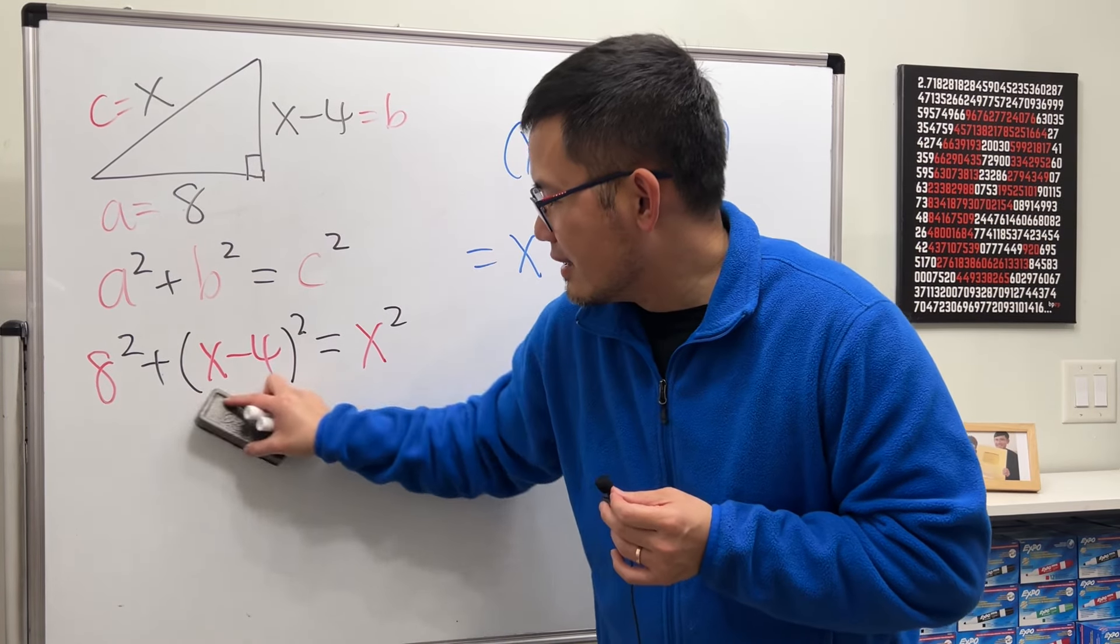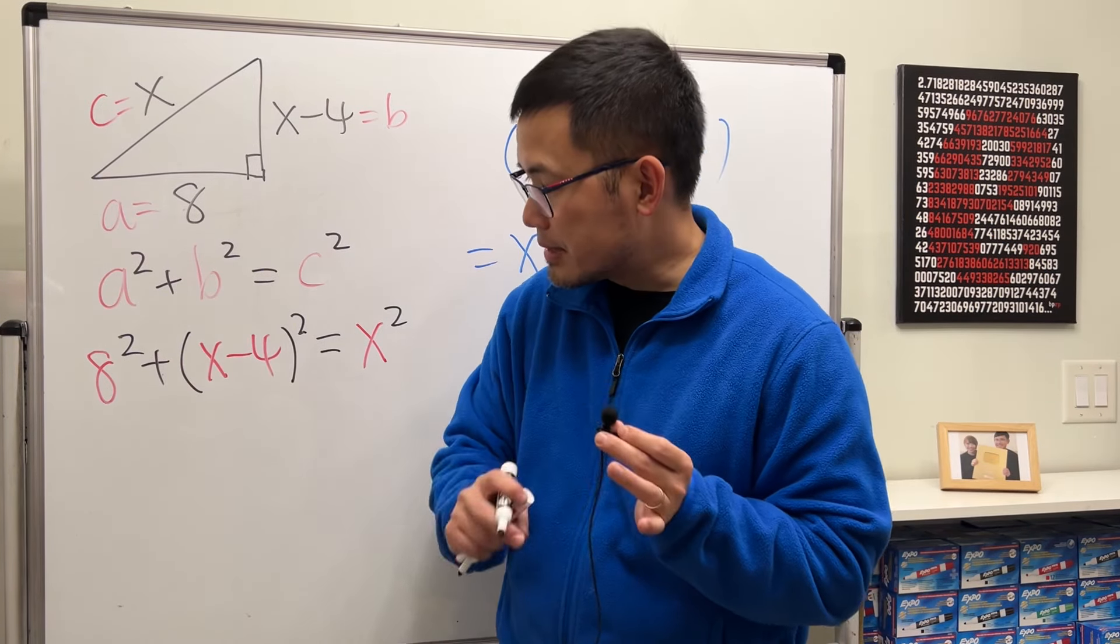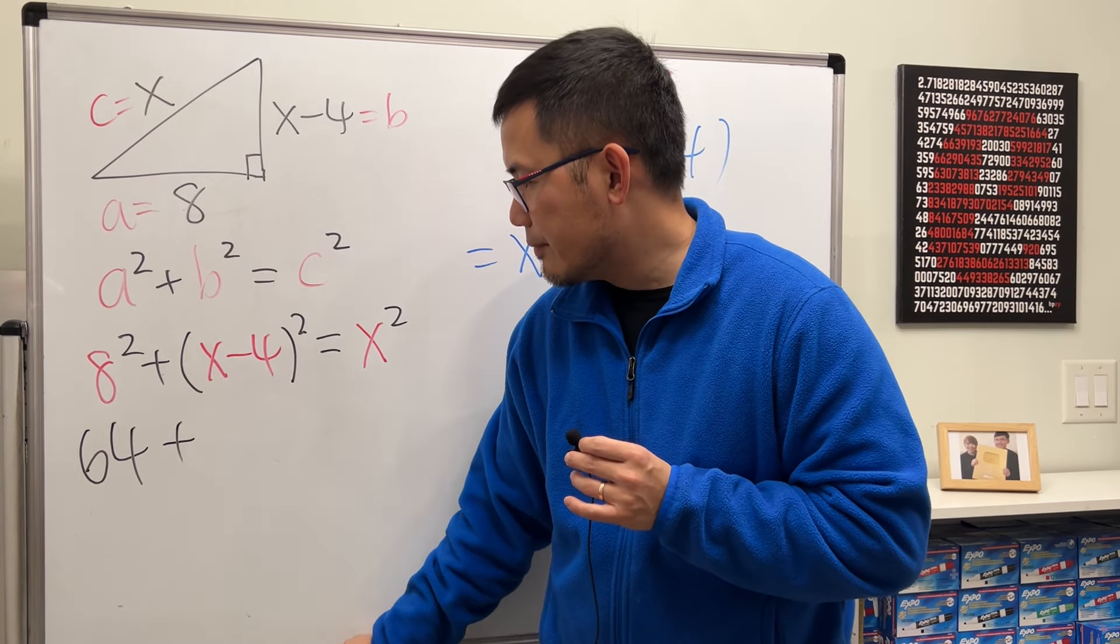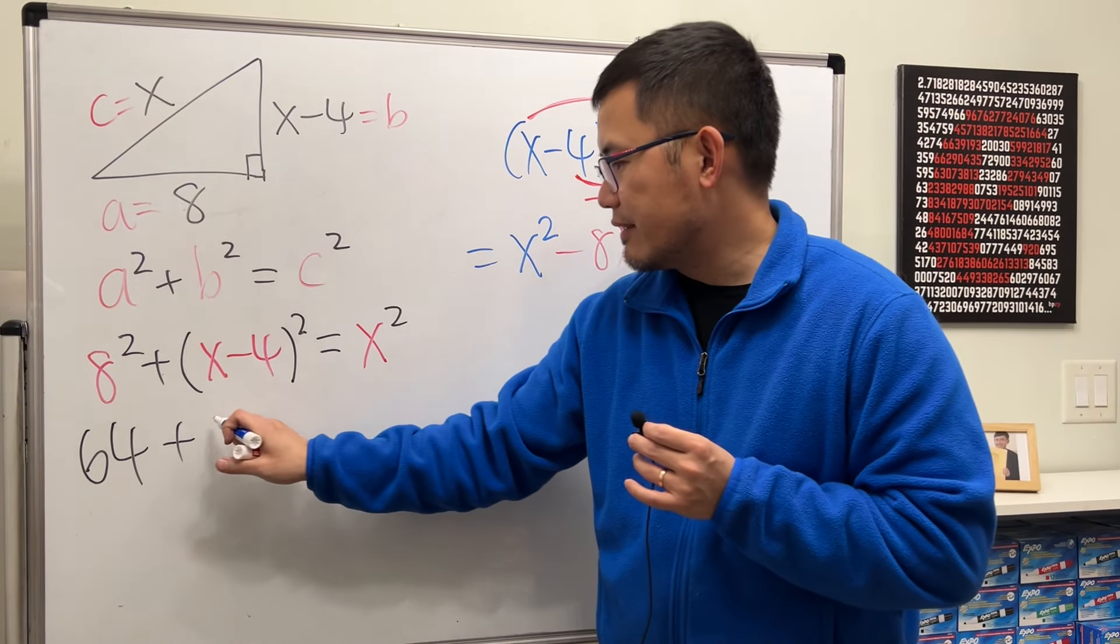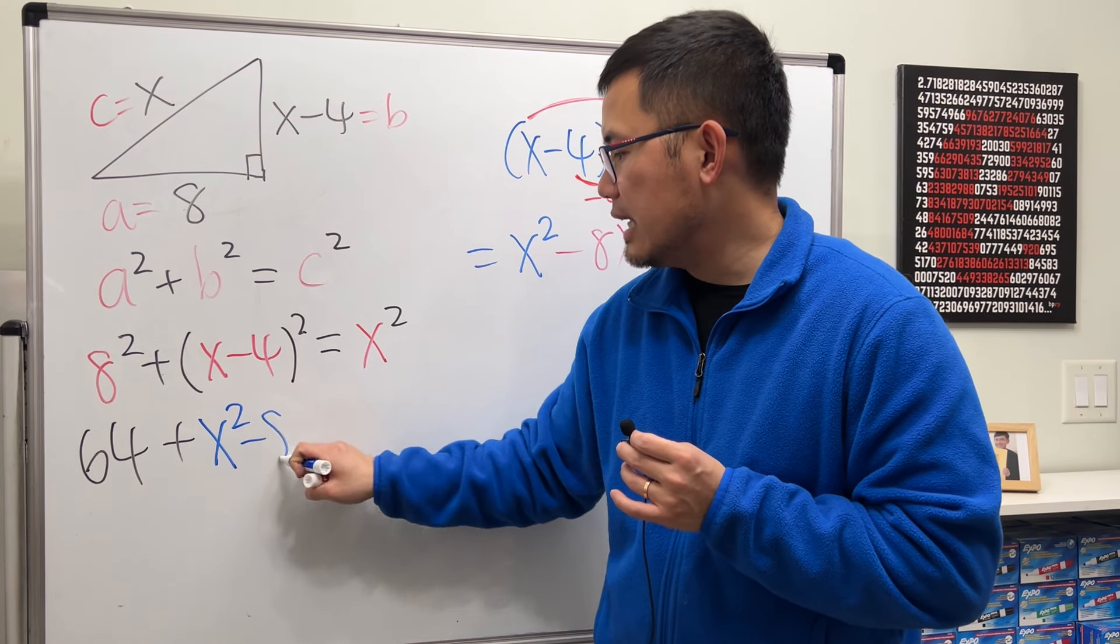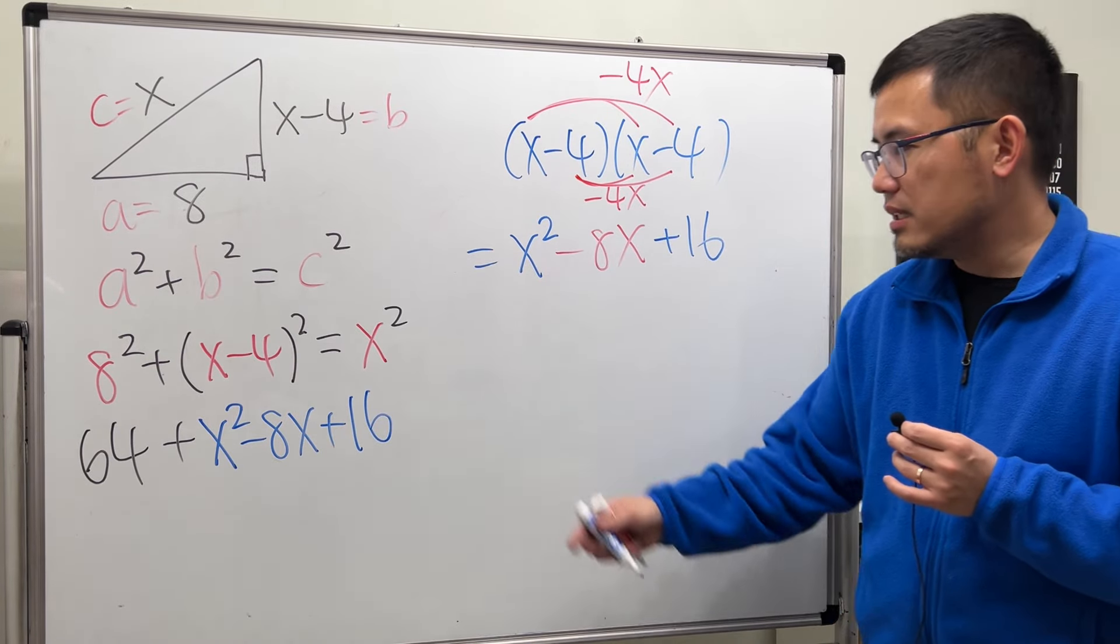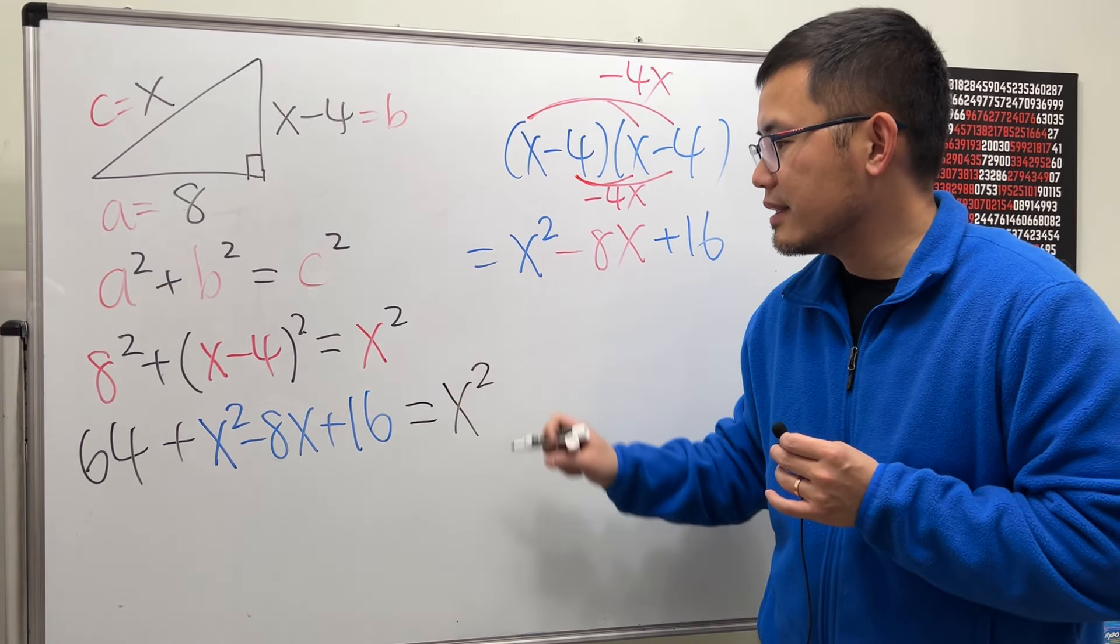Okay, let me just finish this. First, we have 8-squared, which is 8 times 8. That is 64. And then we add. This thing-squared is just all that. So we have x-squared minus 8x plus 16. And lastly, this right here is equal to x-squared.